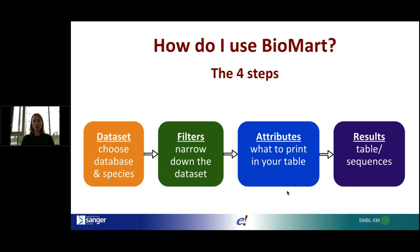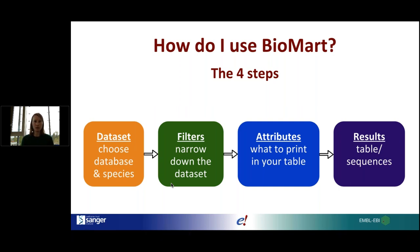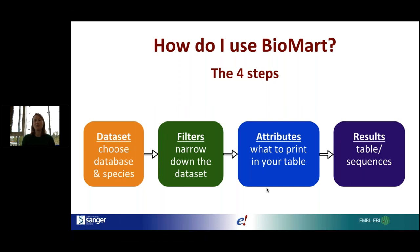There are four steps to setting up a query in BioMart. First, select the dataset that's interesting to you. Next, filter your dataset. After that, choose attributes. Finally, generate your results. Your dataset is the actual database within Ensembl that you want to search, and also your species of interest. Filters narrow down your dataset so you're only searching the relevant part. Attributes are the answers you want regarding your filtered dataset, and results can be in tabular format or as downloaded sequences.